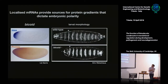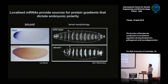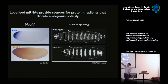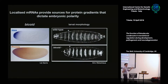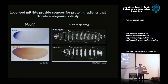Looking at localized RNA, Bicoid provides a nice example: both protein and RNA localize to the anterior pole. The RNA is translated, producing a gradient — high Bicoid concentration at the anterior, low at the posterior. This maternal contribution broadly divides the embryo, after which gap genes, pair-rule genes, and segment polarity genes divide it further — work of Nüsslein-Volhard, Wieschaus, and others. In a Bicoid mutant, the cuticle preparation shows you basically lose the head.